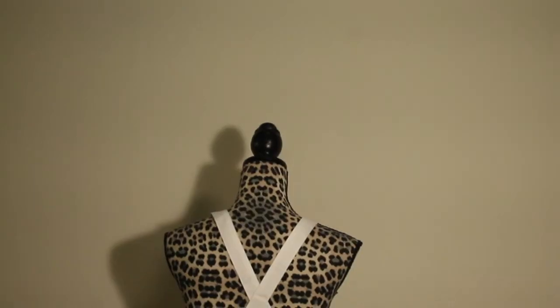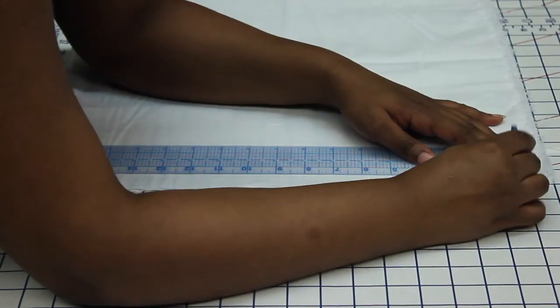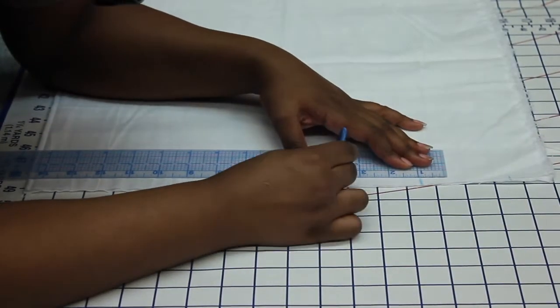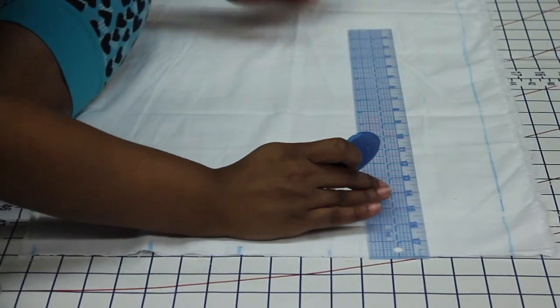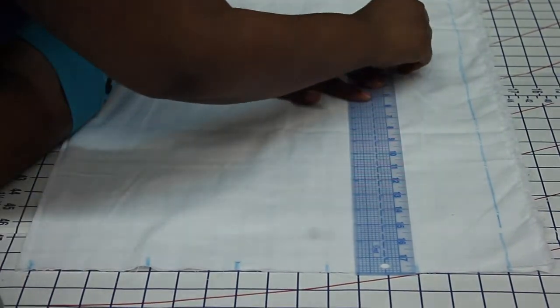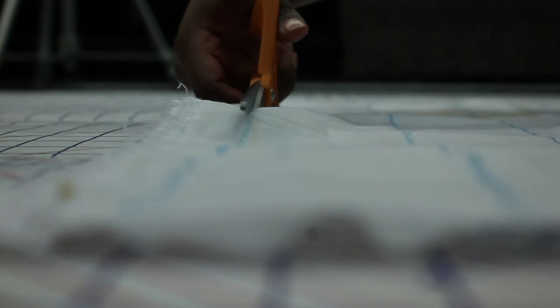In our design we also had cross back shoulder straps that we added in later. The next thing we decided to do was make four inch ruffles to go all the way around the skirt. So here we're just marking down the white fabric and we're just gonna cut them out.